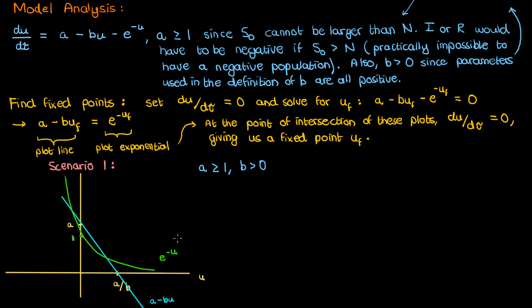In this scenario the line intersects with the exponential at two places. One at a negative value of u and another at a positive value of u. If you look at the differential equation for u, you can see that du by d tau is positive wherever the line is higher than the exponential.